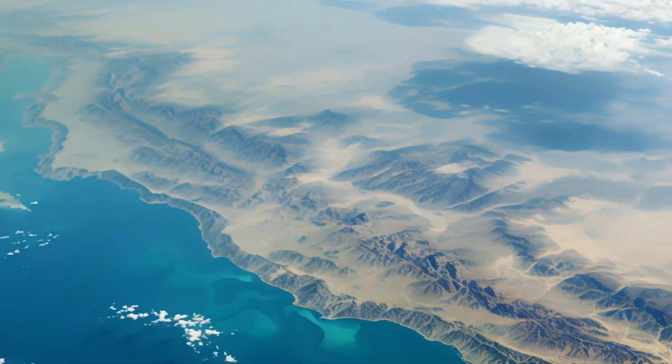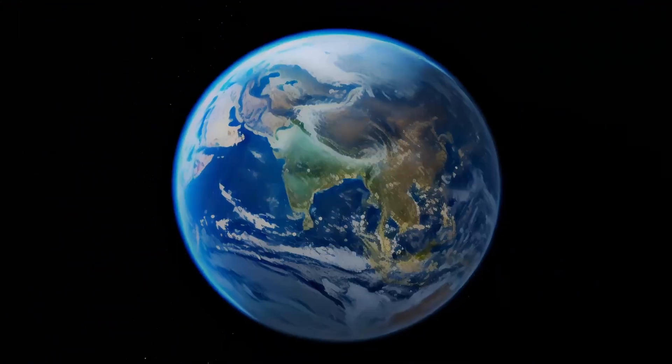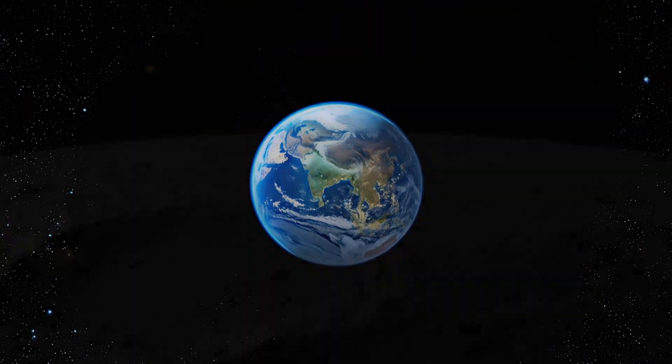10 to the 6th. A 1 with 6 zeros, a million meters, the Earth appears as a solid sphere.